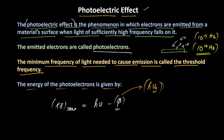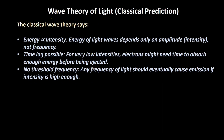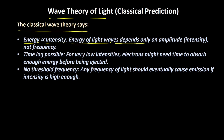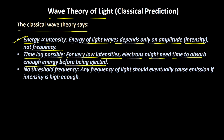Before we understand what the contradictions were with respect to the wave theory of light, let's also understand what the classical wave theory of light was. The classical wave theory says that energy is directly proportional to intensity — the energy of light waves depends only on the amplitude, that is the intensity, not on the frequency. A time lag is possible: for very low intensities, the electrons might need some time to absorb enough energy before being ejected. And there is no threshold frequency — any frequency of light should eventually cause the emission if the intensity is high enough.